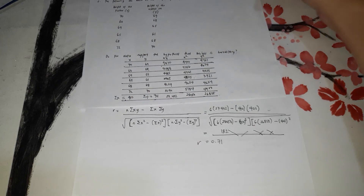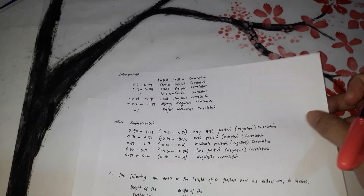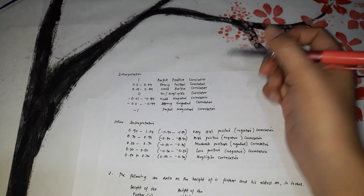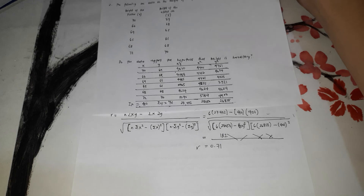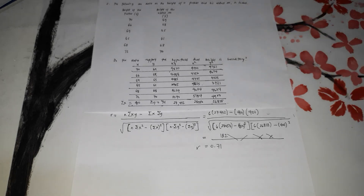R = 0.71. Based on the interpretation table, 0.71 falls in 0.5 to 0.99, which is strong positive correlation. This means as the height of the father increases, the height of the eldest son increases also. So there is a real possibility that height is hereditary — if the father is tall, there is a strong likelihood the eldest son is also tall.